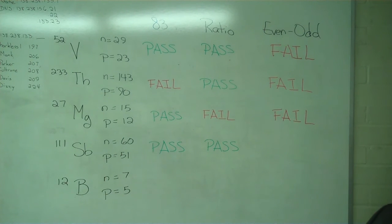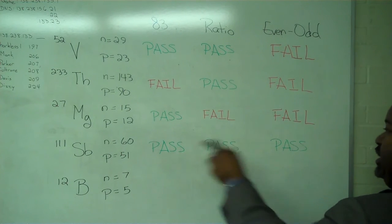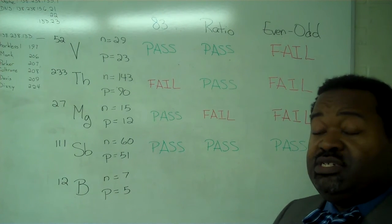And for the even-odd test, 60 is an even number. So this passes on all three and is anticipated to be stable.